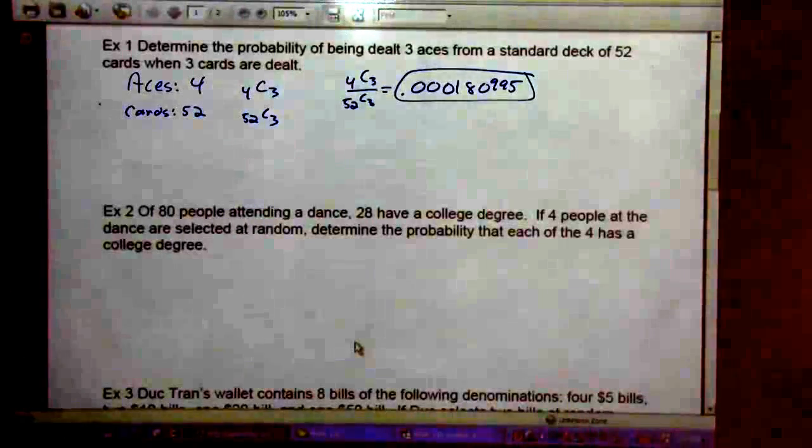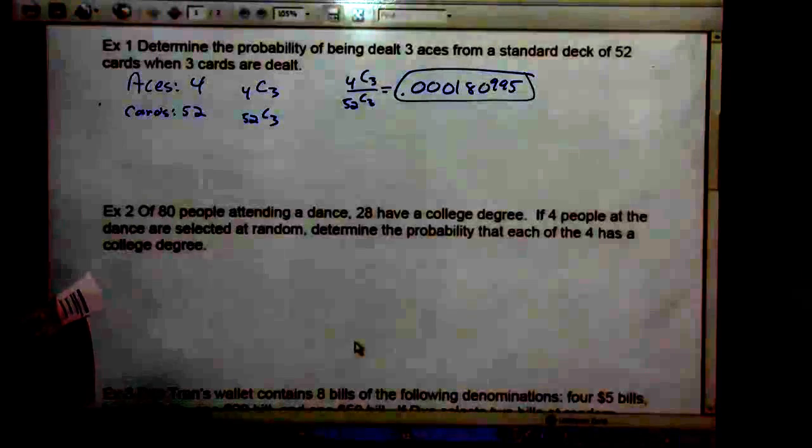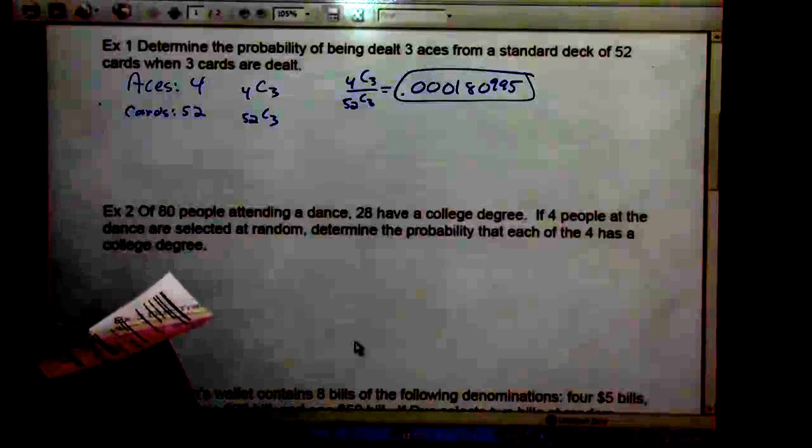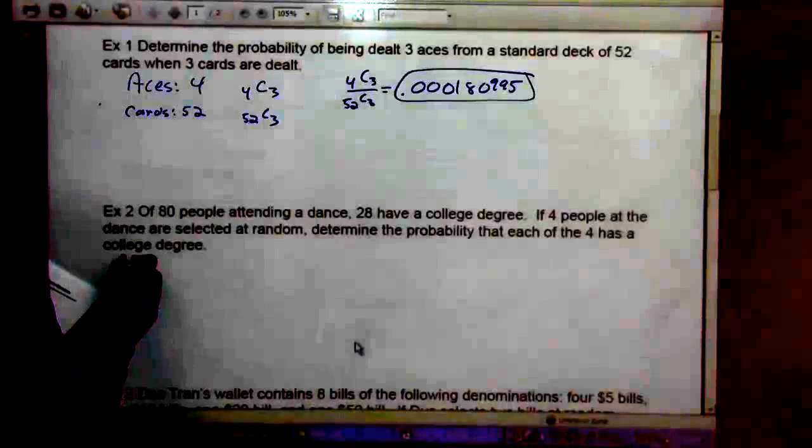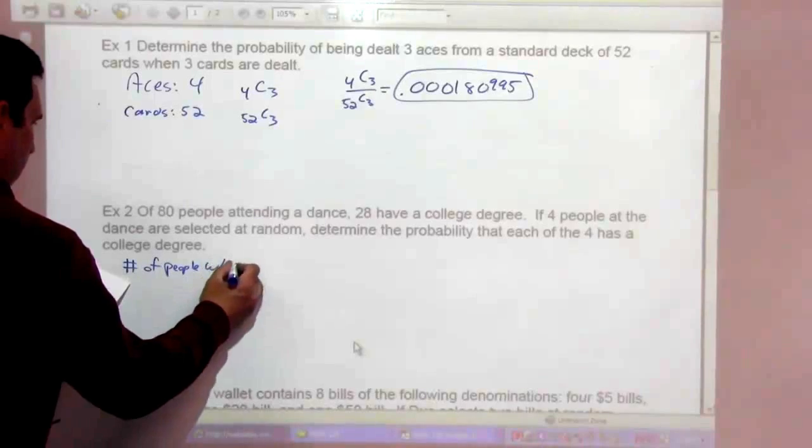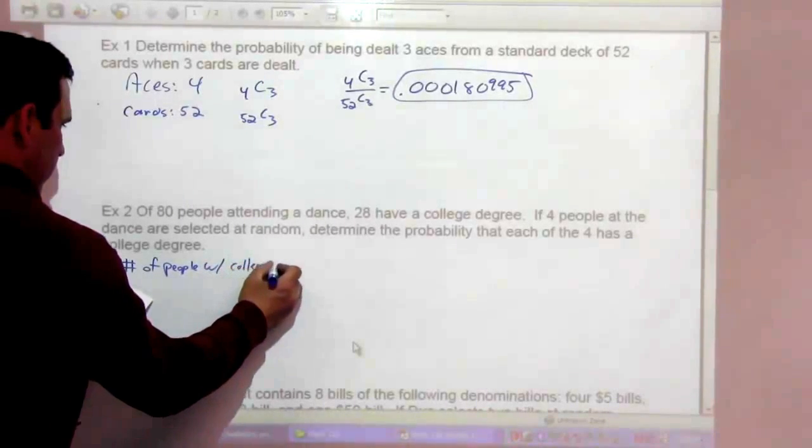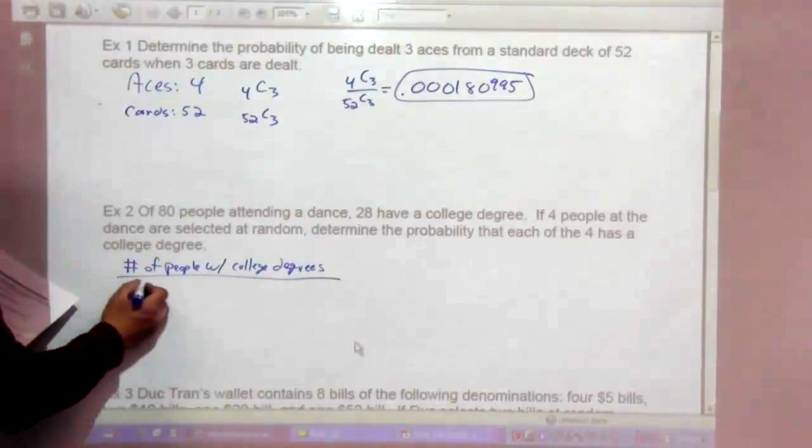Example 2: Of 80 people attending a dance, 28 have a college degree. If 4 people at the dance are selected at random, determine the probability that each of the 4 has a college degree. So this would be the number of people with college degrees divided by the number of people.